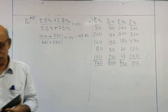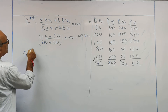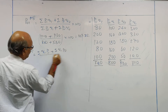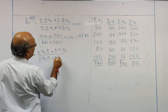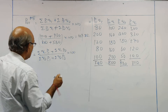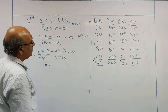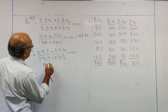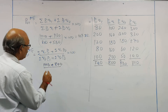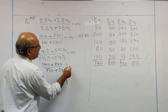Now you can also calculate the quantity index number of Marshall-Edgeworth: summation of Q1P1 plus summation of Q1P0, divided by summation of Q0P1 plus summation of Q0P0, into 100. So: P1Q1 is 1110, plus P0Q1 which is 800, divided by P1Q0 which is 930, plus P0Q0 which is 580, multiplied with 100.